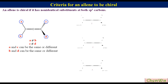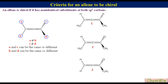Let's take three examples for clarification. In compound 1, on the left sp2 carbon A is H and B is CH3, so A and B are different. On the right carbon, C is H and D is CH3, so C and D are also different. Therefore compound 1 is chiral, even though A and C are the same and B and D are also the same.